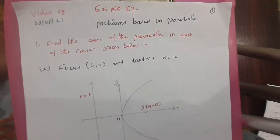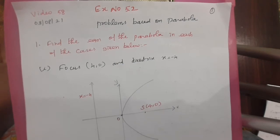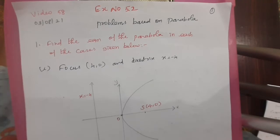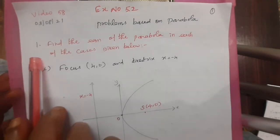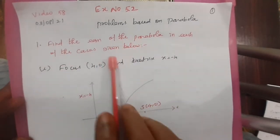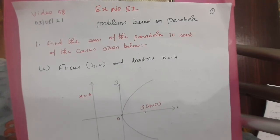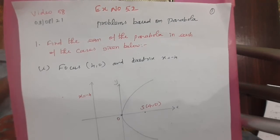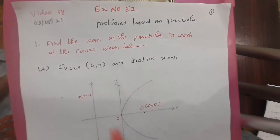Good morning students. Today in class I am going to solve Exercise 5.2. I am going to discuss some problems based on the parabola. We will cover most of the problems based on the parabola equation. What are the four types of parabola? Rightward curve, upward curve, leftward curve, and downward curve. Depending on what is given, we make a diagram and then find the equation.